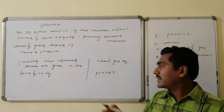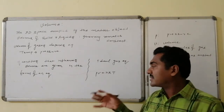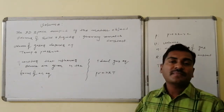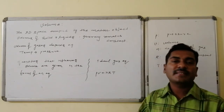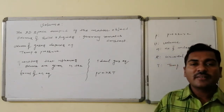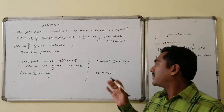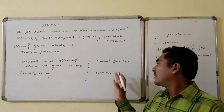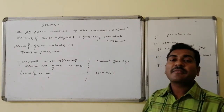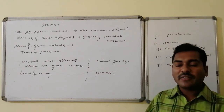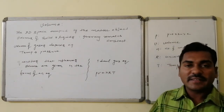R remains constant throughout the entire universe and equals PV divided by nT. Now let us discuss the quantities involved in the ideal gas equation: pressure and its CGS and SI units and derived units, number of moles, temperature, and the value and units of R.